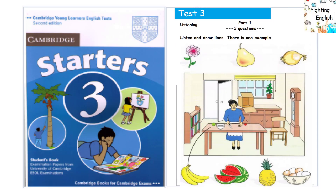Part 1. Look at Part 1. Now look at the picture. Listen and look. There is one example. Put the bananas on the table, please. Put the bananas where? On the table. Can you see the line? This is an example. Now you listen and draw lines.